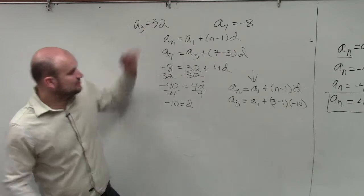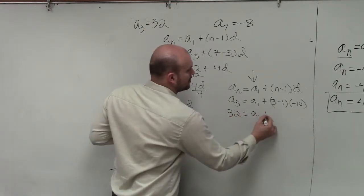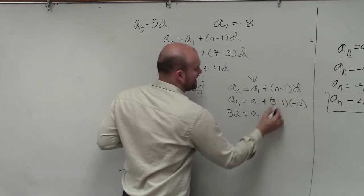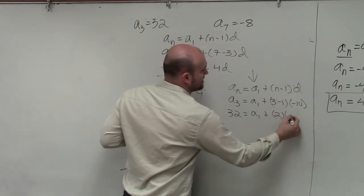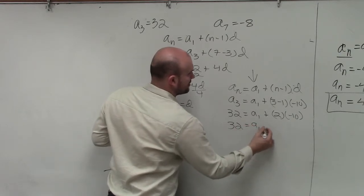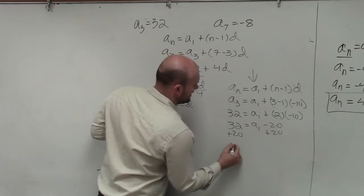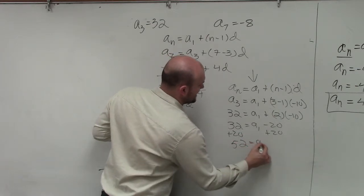Now, we know what a sub 3 is, which is 32, equals a sub 1 plus 3 times 2, 3 minus 1 is 2, times negative 10. 32 equals a sub 1 minus 20 plus 20. 52 equals a sub 1.